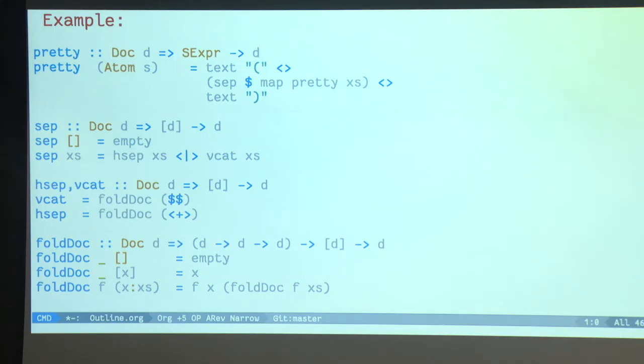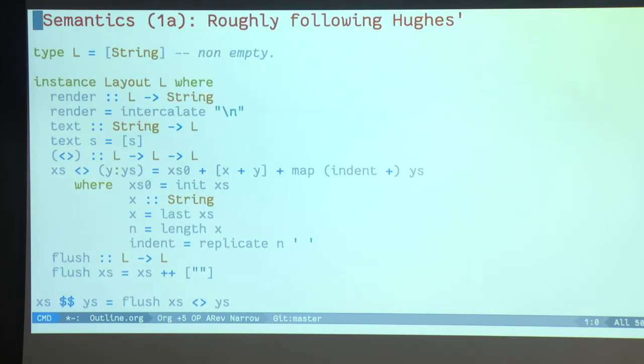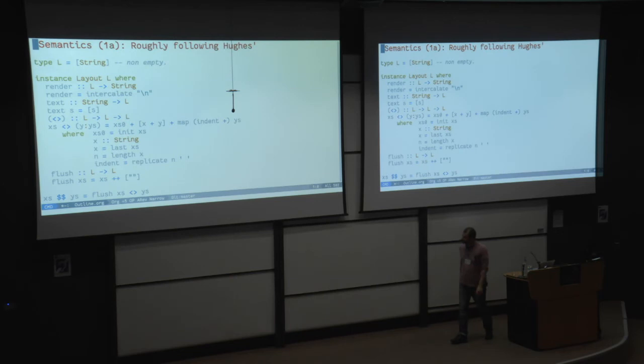And the library should pick the best one. Using this API, we can express the pretty printer for S expressions succinctly like so. I think here is the important part. We can either layout horizontally or vertically.